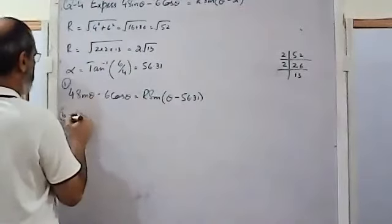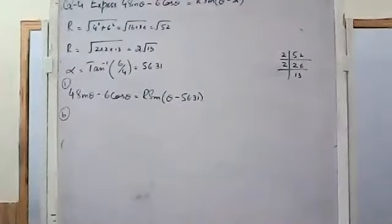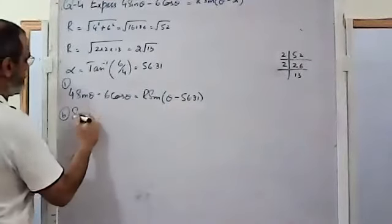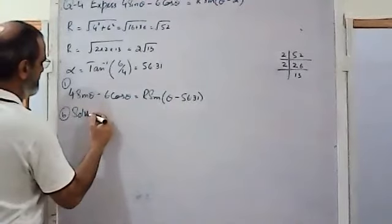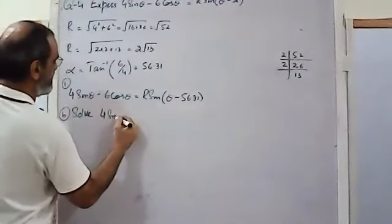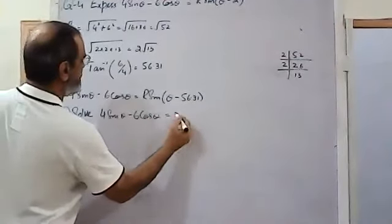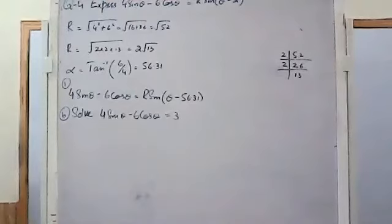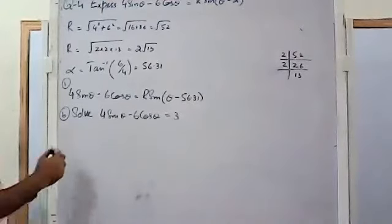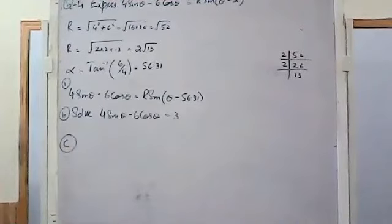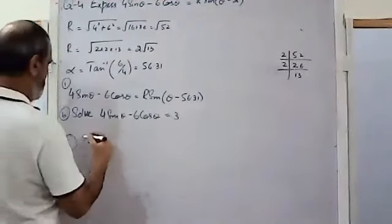That completes part (a). For part (b), I'm leaving it for you to solve: 4sinθ - 6cosθ = 3. You can do it yourself using the converted form.